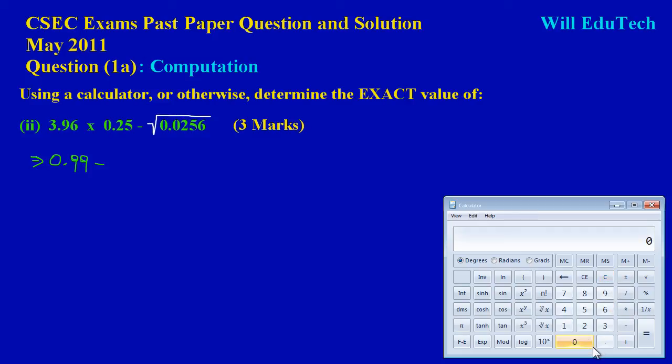So here now, I have 0.0256 and I'm taking the square root of that, and my answer will be 0.16. So this here works out to be 0.16.